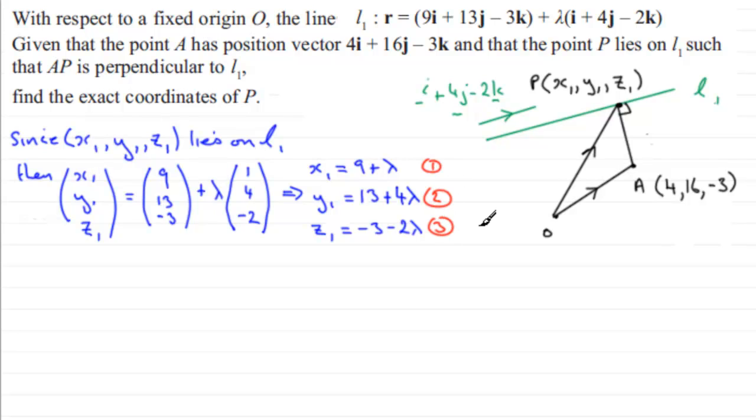So where do we get our fourth one from? Well, we build our fourth one from the fact that AP is perpendicular to the direction vector of the line, i plus 4j minus 2k. So we know that this vector AP, AP or even PA, it wouldn't matter, but this vector dotted with this vector here would equal 0. The perpendicular rule for vectors.